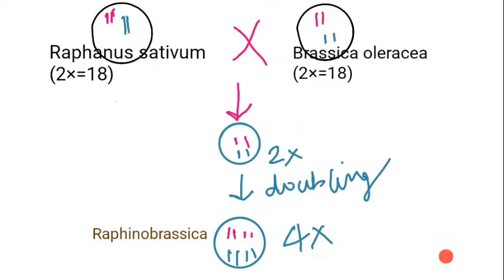The haploid of Raphanus sativum contains 9 chromosomes, and the haploid of Brassica oleracea also contains 9 chromosomes. When they form a hybrid, the 9 chromosomes from each different variety cannot form homologous pairs, synapsis does not occur in the hybrid, and that is why the hybrid is sterile in the diploid state.